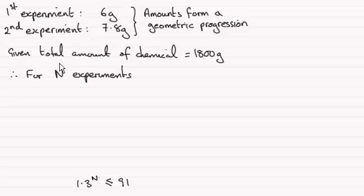We're given that the total amount of chemical she's got is 1,800 grams. We've got to show that for N experiments, 1.3 to the power of N must be less than or equal to 91, and then go on to find out what N is by using logarithms.